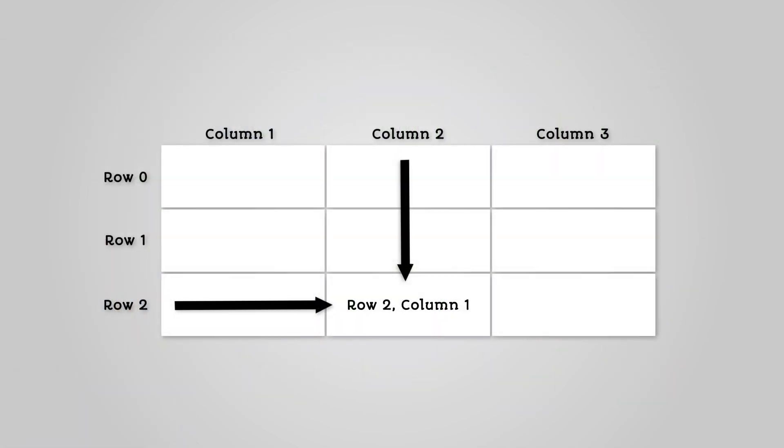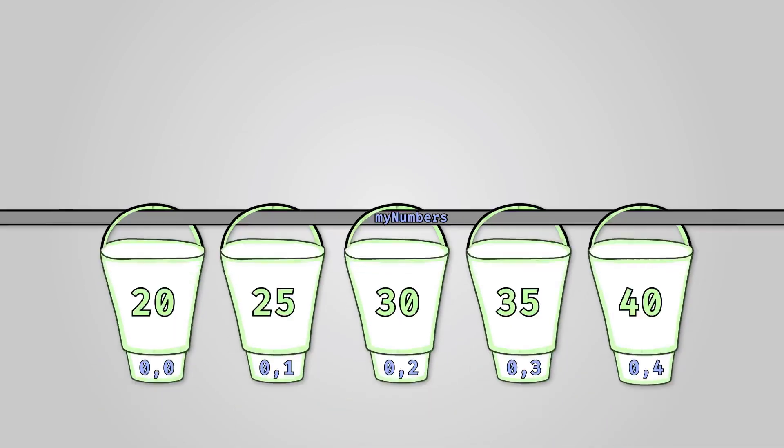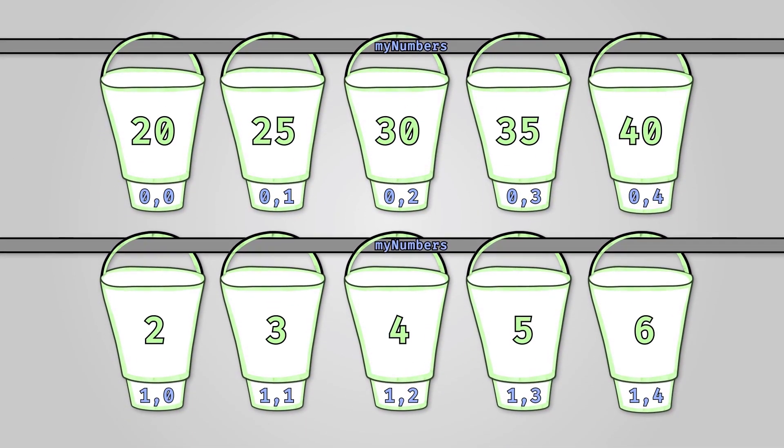To get data out of a 2D array, we use the row and column index of each element. Let's look at our 2D array from the beginning of the lesson. So looking at this, element 1, 2 contains the number 4.